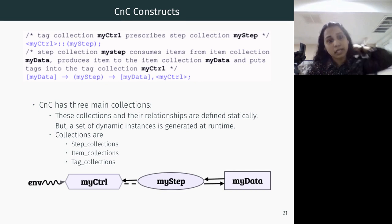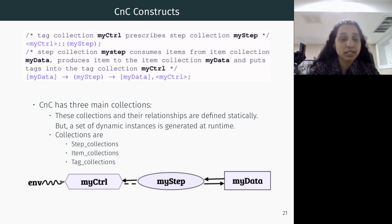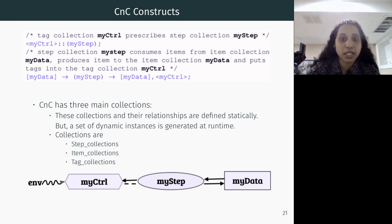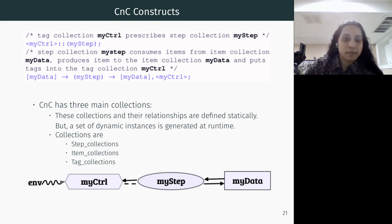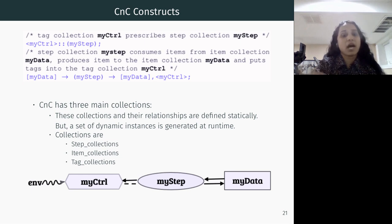The CNC constructs use specific notation: parentheses denote step collections, square brackets denote item (data) collections, and angle brackets denote tag collections. A step collection is the actual function that executes — it reads and writes items in the item collection. A tag collection prescribes to a step collection to express that a function can execute after certain conditions are met, by putting a tag into the tag collection.